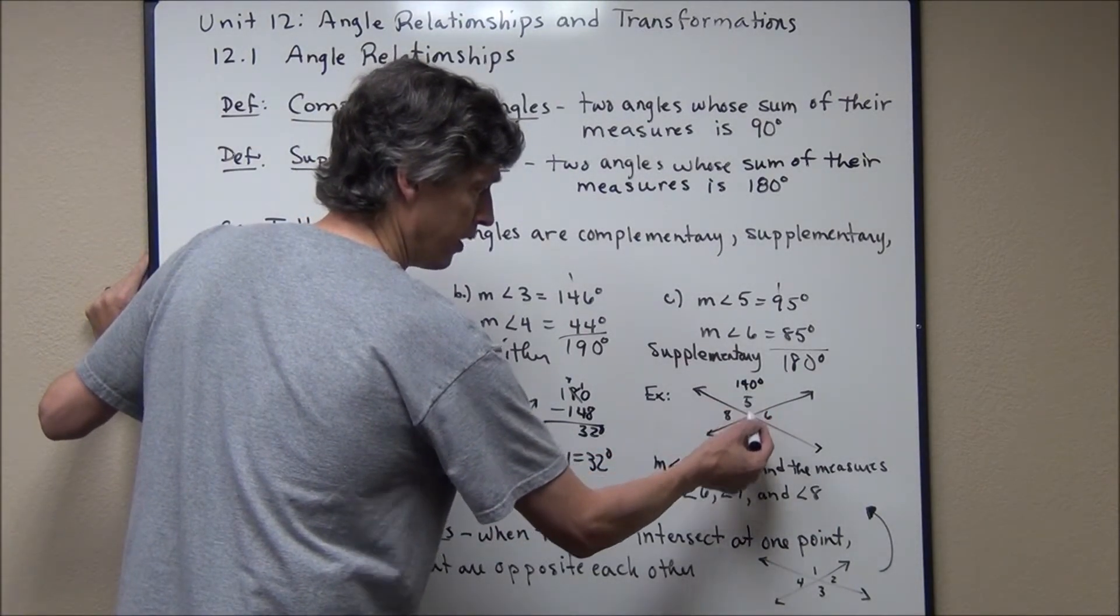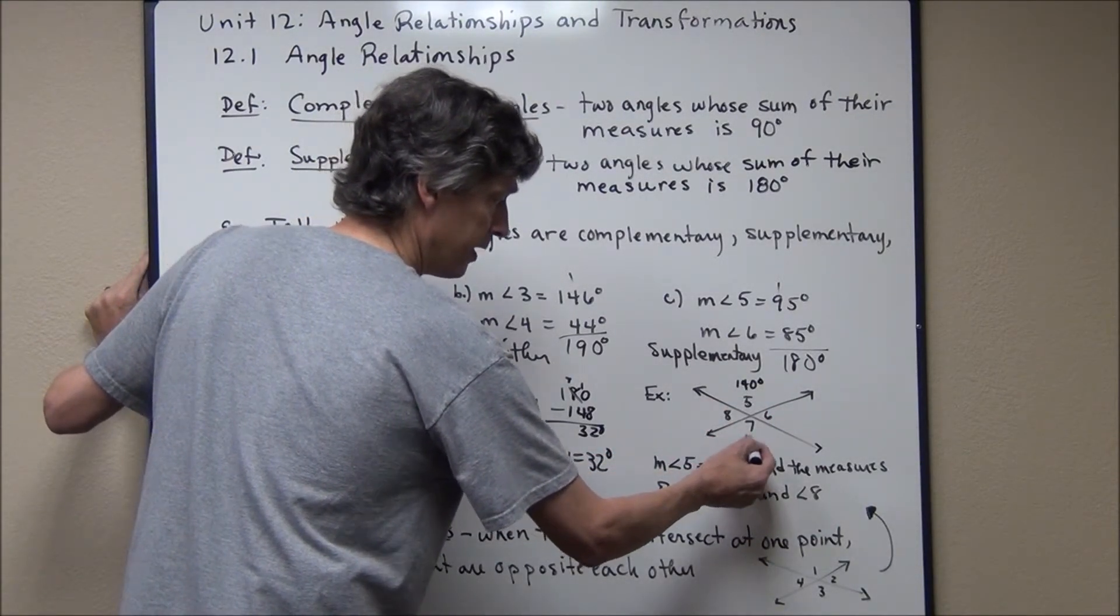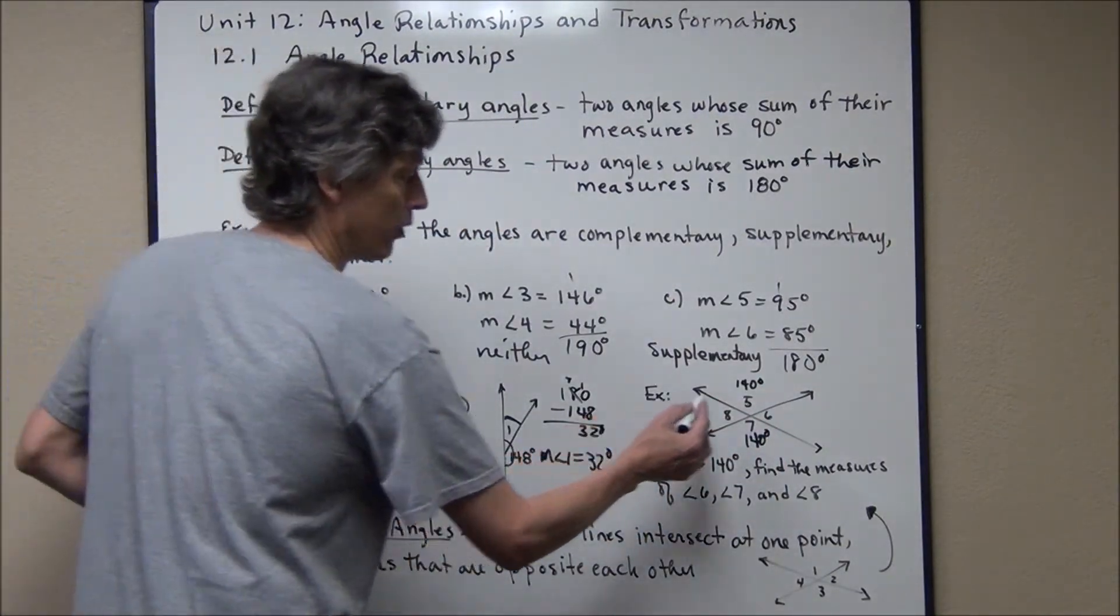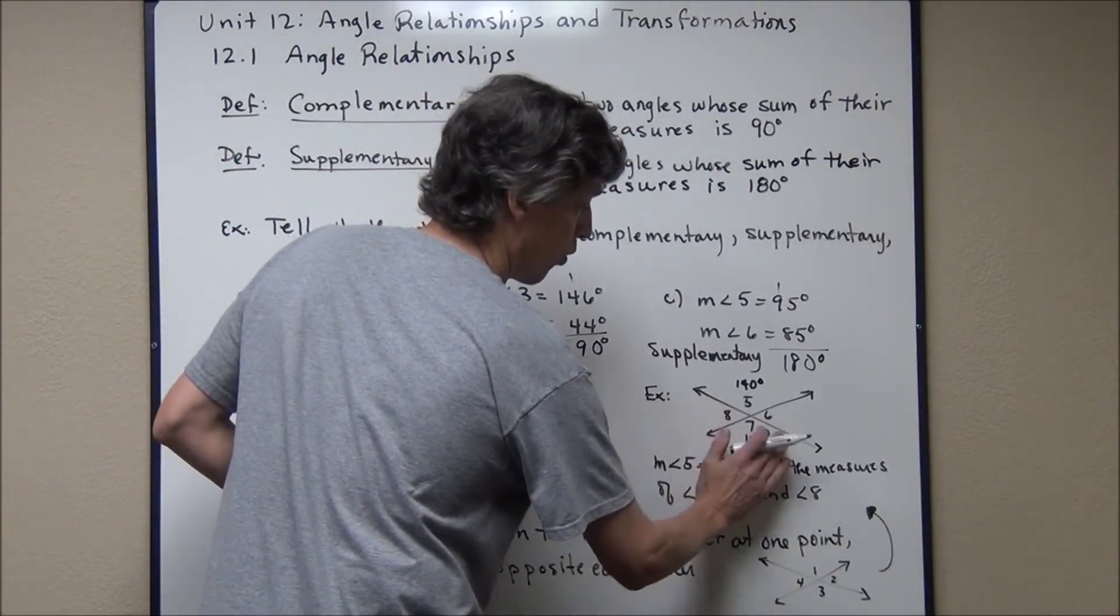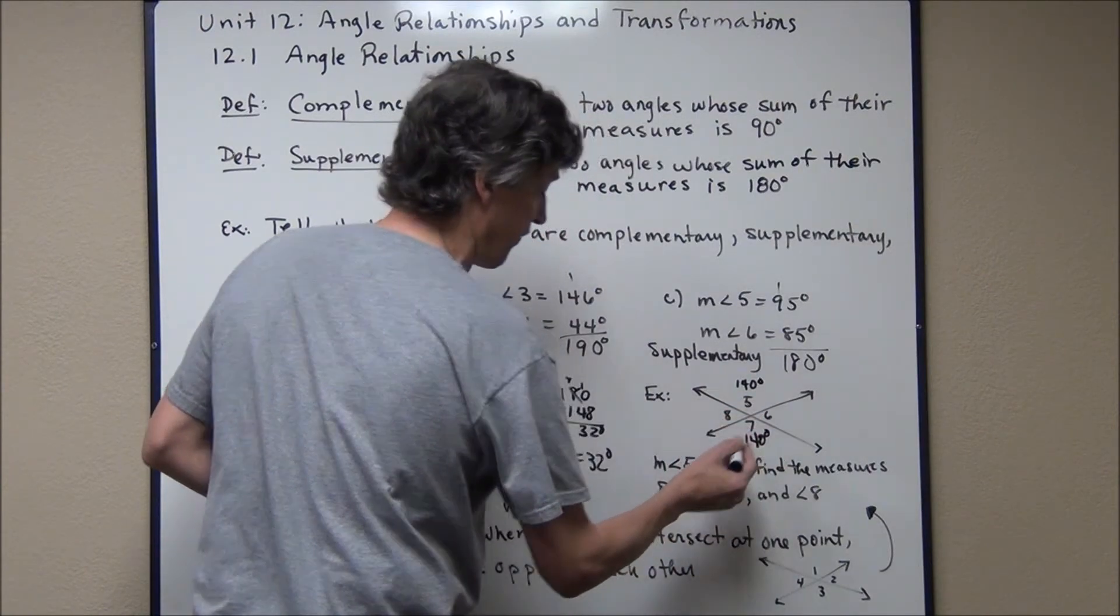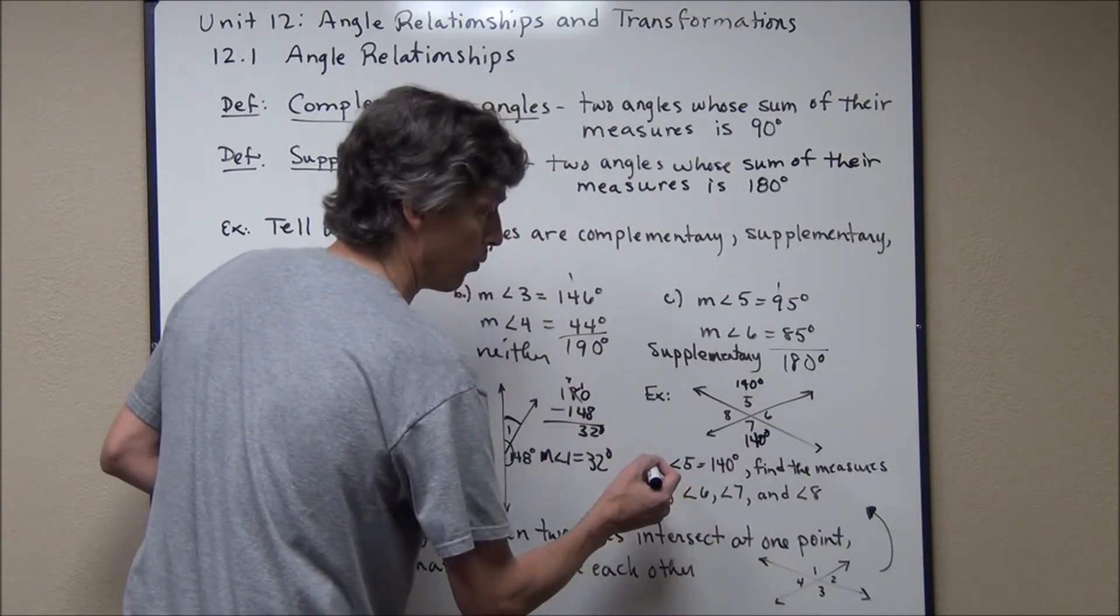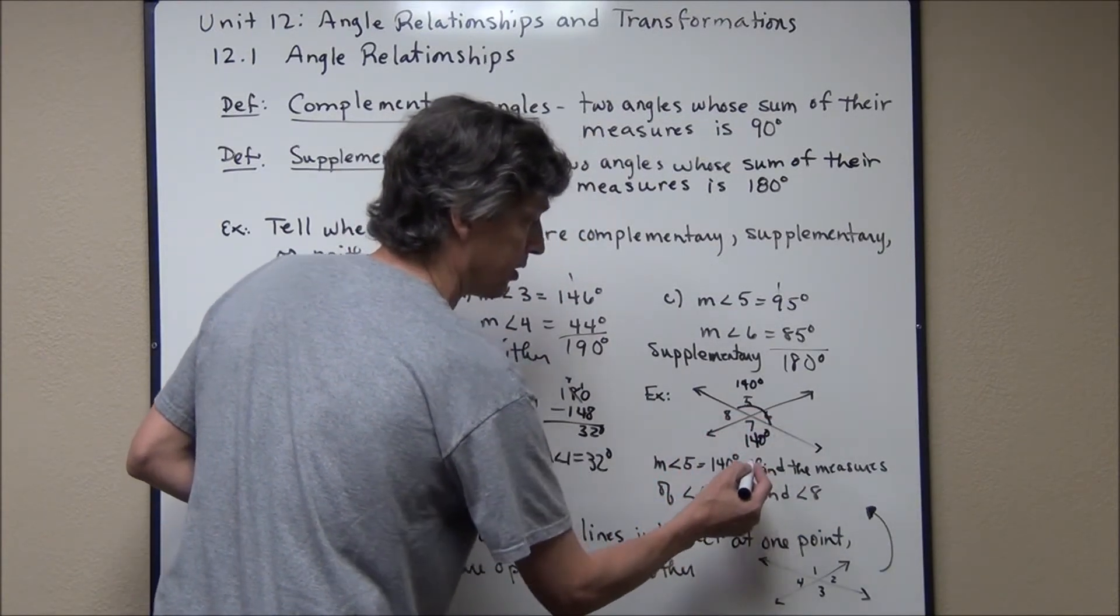Well, if angle five is 140 degrees, so is angle seven because they're vertical angles and vertical angles are congruent. Now, if you're looking at angle five and angle six, ignore seven and eight right now. Just look at angles five and six. It's kind of like this. I have a linear pair. I have two angles that add up to 180. This is going to be 180 degrees.